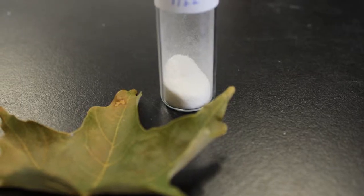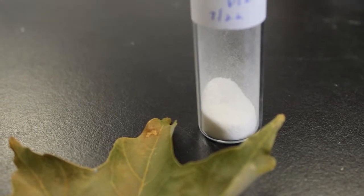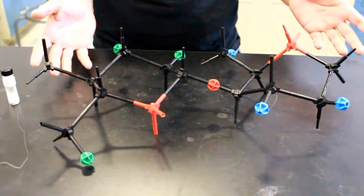This is cellulose. The plants around you are made of about 50% cellulose. It's found mostly in the cell walls. This is what cellulose looks like on a molecular level.